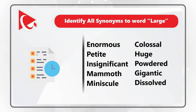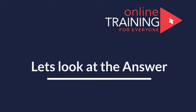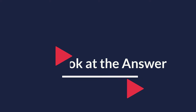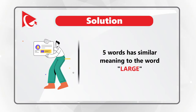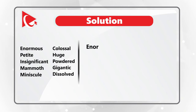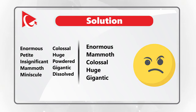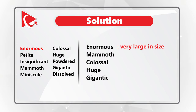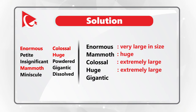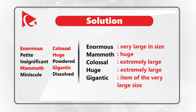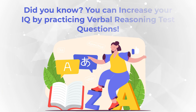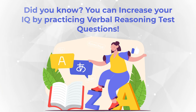I found 5 words that are similar in meaning to the word 'large': enormous, mammoth, colossal, huge, and gigantic. Enormous means very large in size. Mammoth means huge. Colossal means extremely large. Huge similarly means extremely large. And gigantic means an item of a very large size. Practicing questions like this not only helps increase your English vocabulary but also increases your IQ.